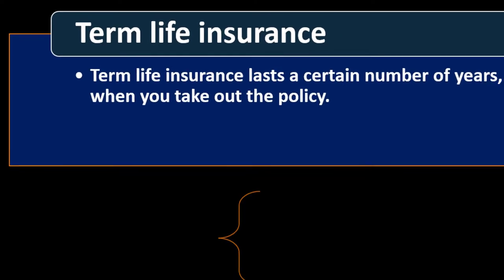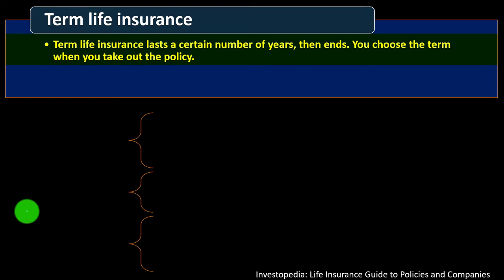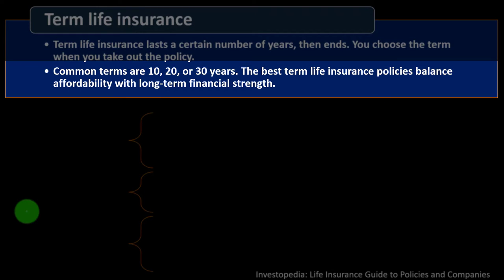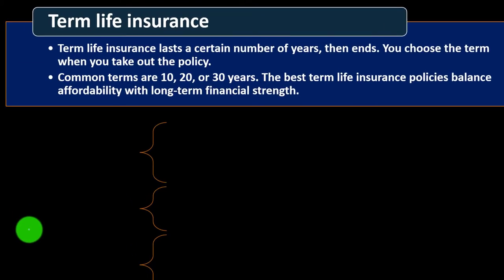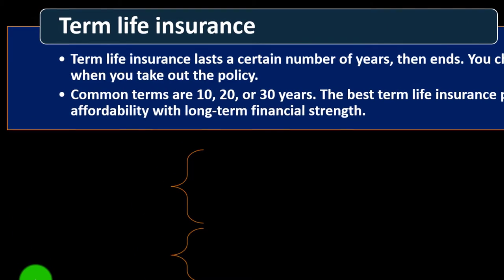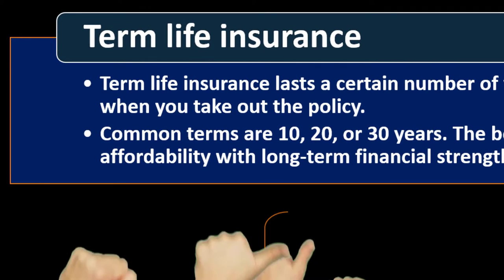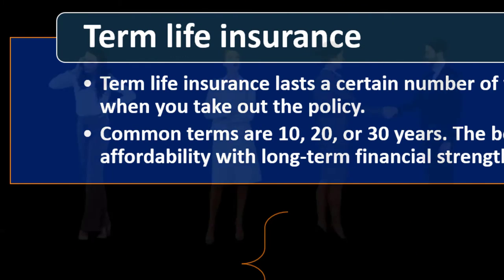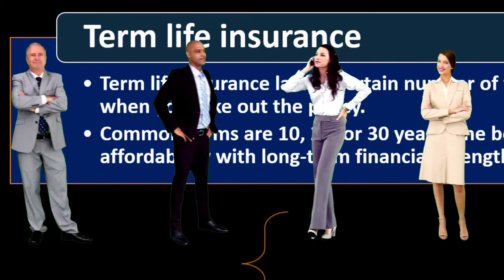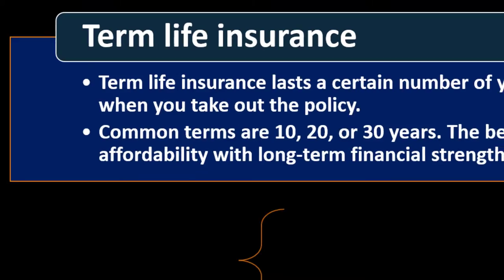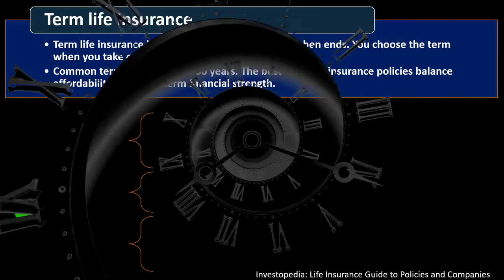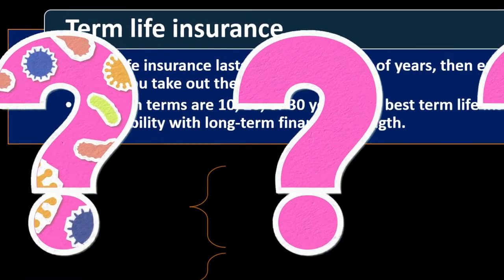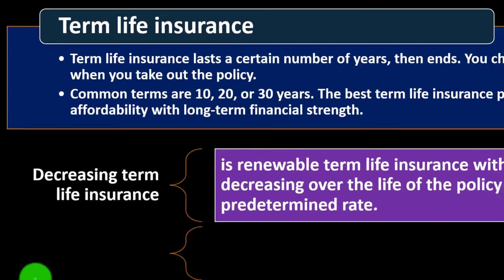Term life insurance lasts a certain number of years, then ends. You choose the term when you take out the policy. Common terms are 10, 20, or 30 years. The best term life insurance policies balance affordability with long-term financial strength. Term life insurance is nice because most of the time when you're thinking about life insurance, you're probably thinking you'll need coverage during the part of your life when you're making income that other people are dependent upon.